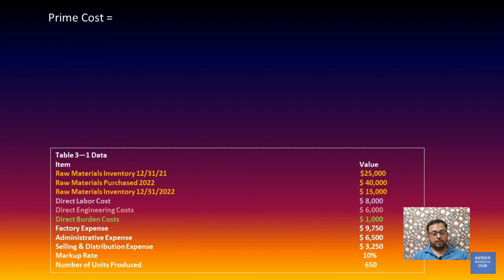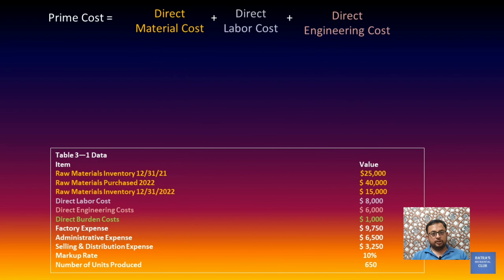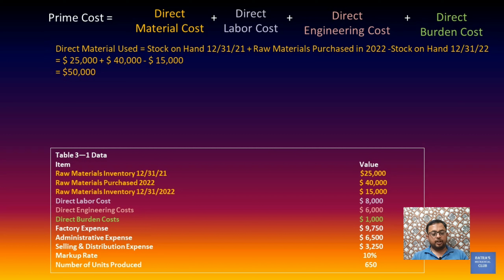We have framed the data with different colors so it will be easier to understand. First, we will find out the prime cost, which is the sum of direct material cost, direct labor cost, direct engineering cost, and other burden cost. We already have inventory of $25,000 from 2021. To this we add the raw material purchased in 2022, which is $40,000, and after production we are left with inventory of $15,000, which we deduct, giving us a direct material cost of $50,000.